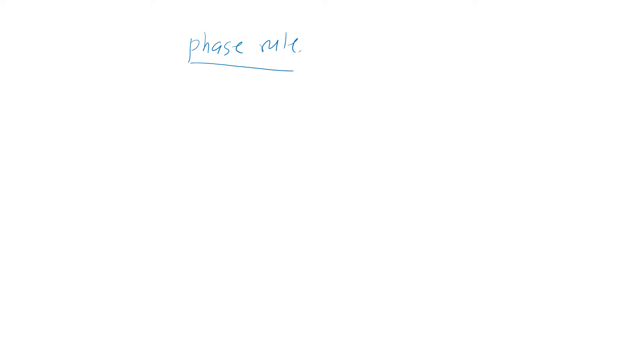Greetings everyone. Today we want to look at the derivation of the phase rule. From our previous discussion we know that F is equal to C minus P plus 2, where F is the degree of freedom, C is the component, P is the phase, and 2 basically stands for temperature and pressure.